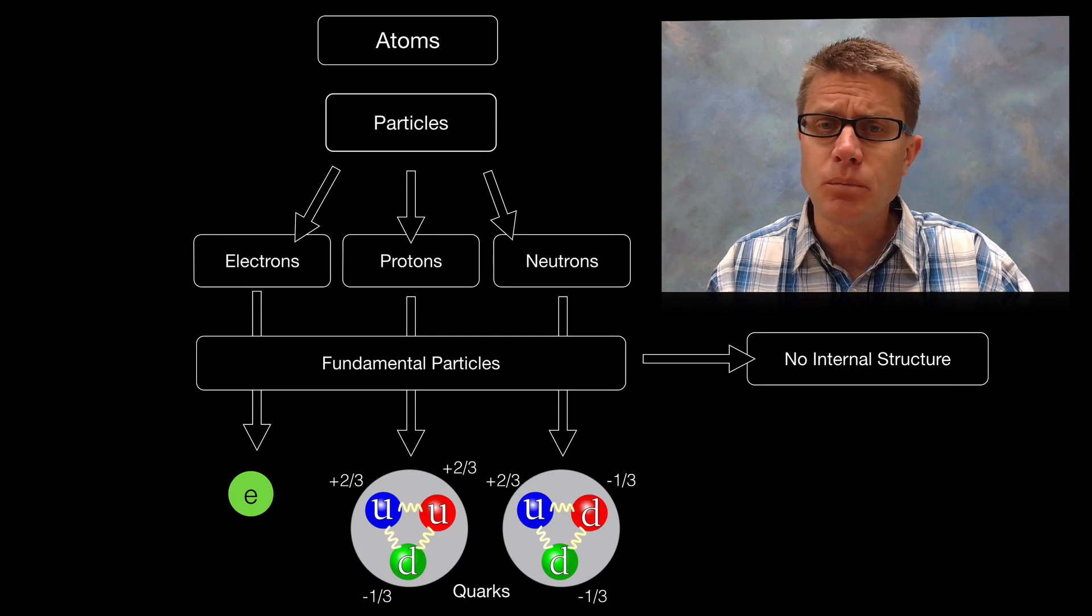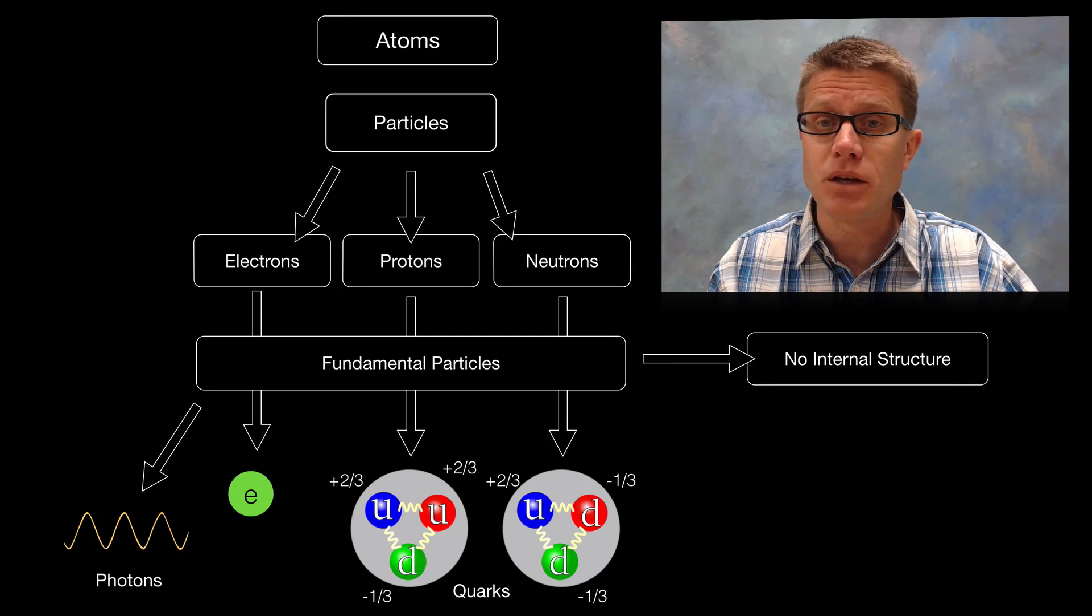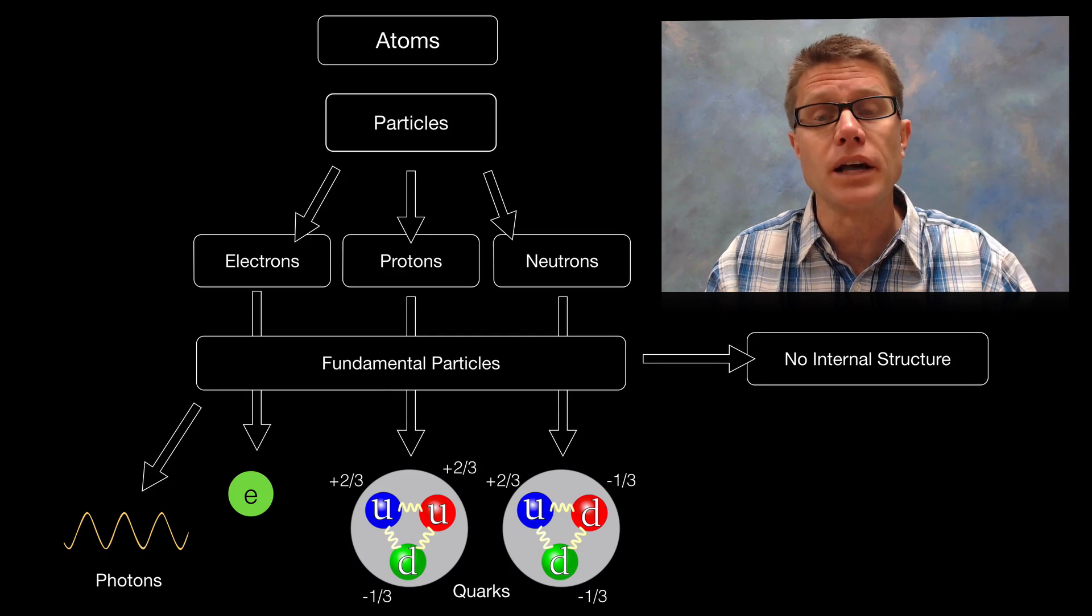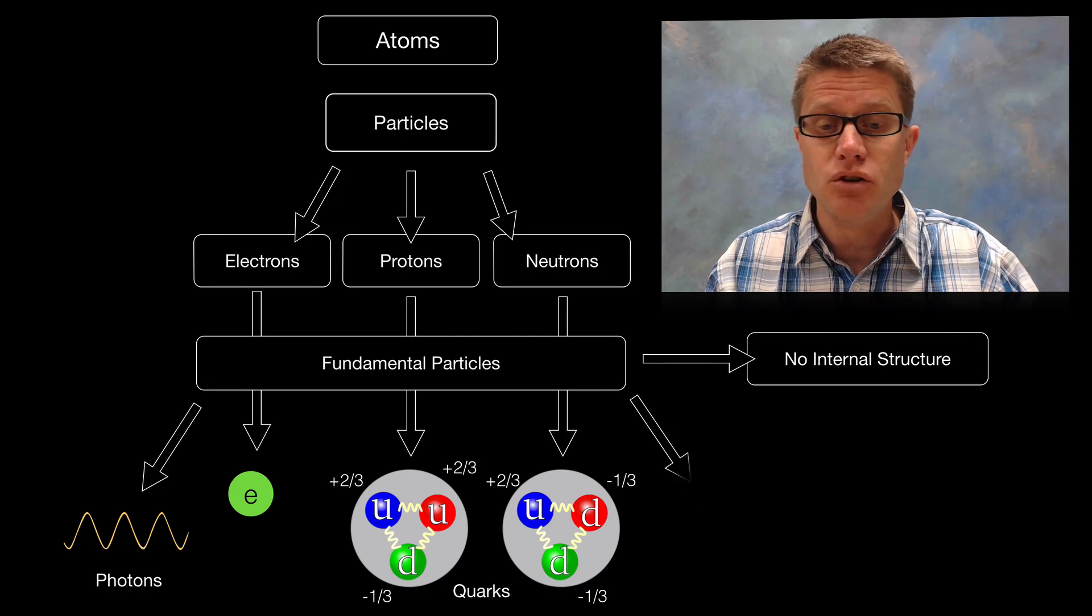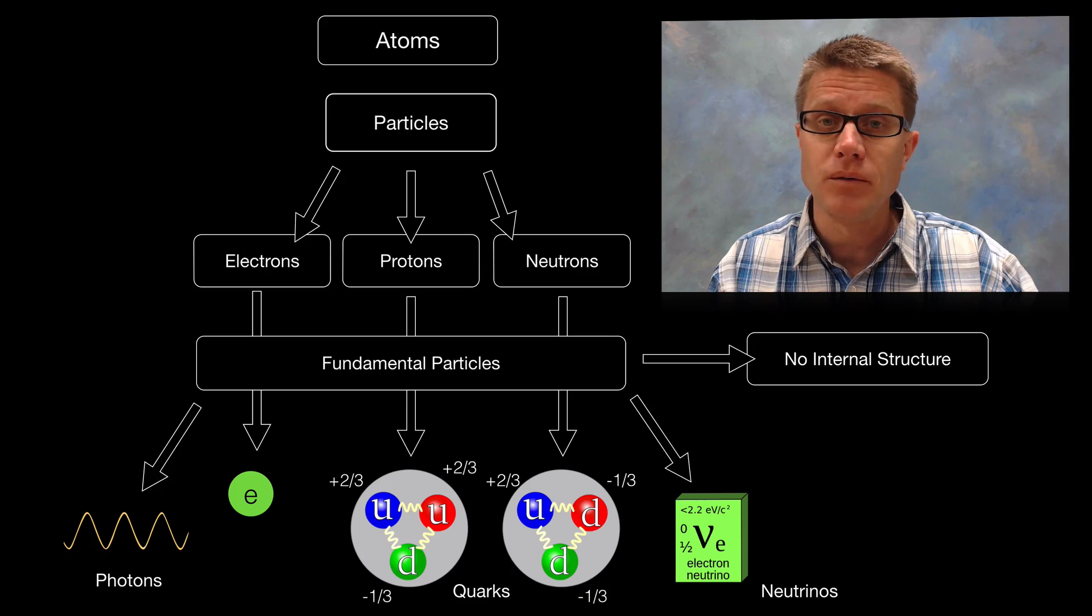What are some other fundamental particles? Photons are going to be little quanta of light or electromagnetic radiation. Neutrinos are another type of fundamental particle.